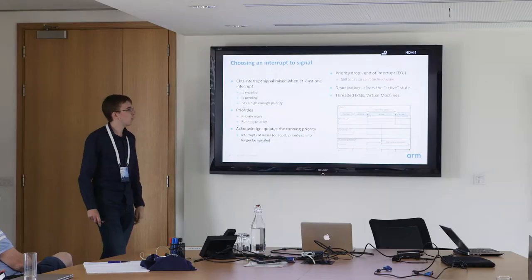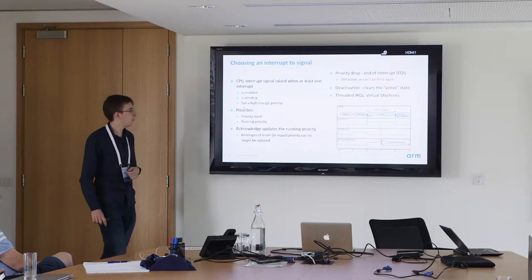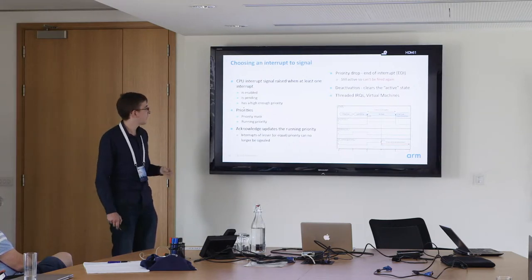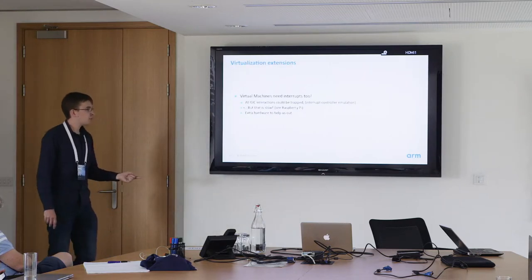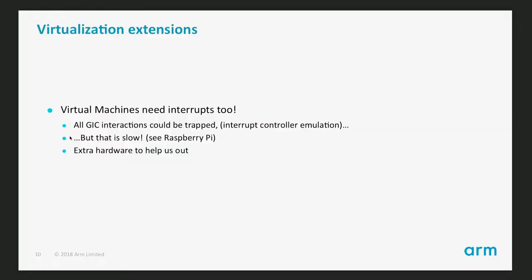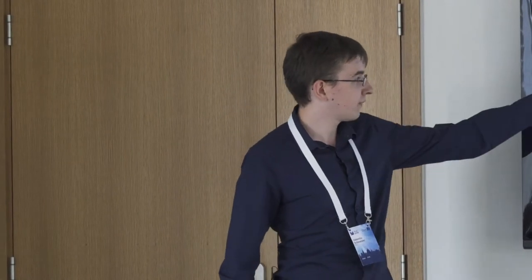This split is useful for threaded IRQs and virtual machines. Virtual machines need interrupts because we want to run software that handles interrupts. One way is to trap every instruction that interacts with the GIC at the hypervisor level — essentially emulating the GIC in software. But that would be really slow because interrupts are the lifeblood of a system and there's a lot of overhead. That's what happens on the Raspberry Pi because it has no hardware support for this.